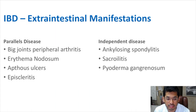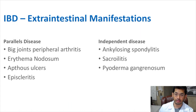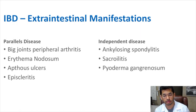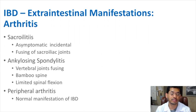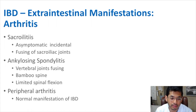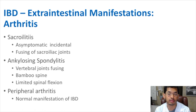To summarize the extra intestinal manifestations: those that parallel the disease can be a sign of when your flare is occurring. When you start to have joint pain or aphthous ulcers on your lips, this may be a sign of worsening disease. There are a couple of different arthritis conditions you can have, including sacroiliitis, ankylosing spondylitis, or peripheral arthritis — arthritis of the big, large joints — which can parallel the disease process.